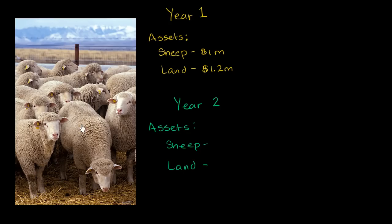Let's say I run a sheep farm, maybe a wool producing business. In year one, I buy a bunch of sheep and put them on some land. I buy the sheep for $1 million and the land for $1.2 million. So I have $2.2 million in assets. Nothing confusing there.